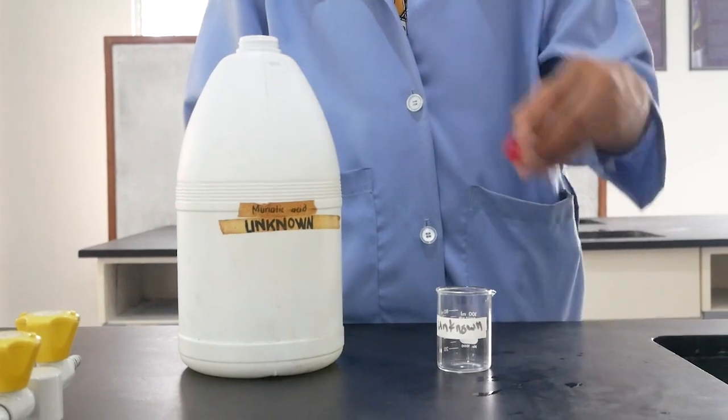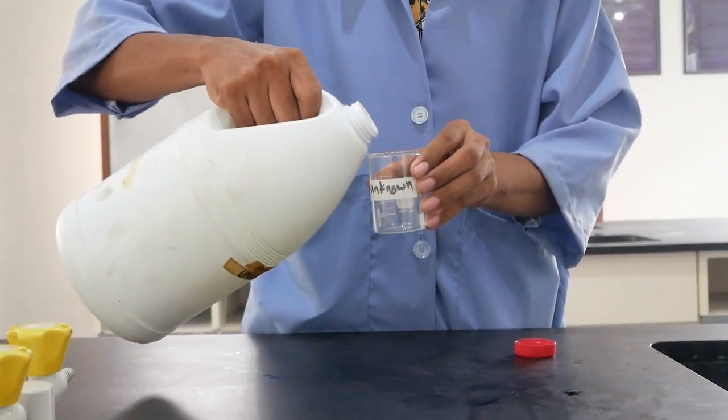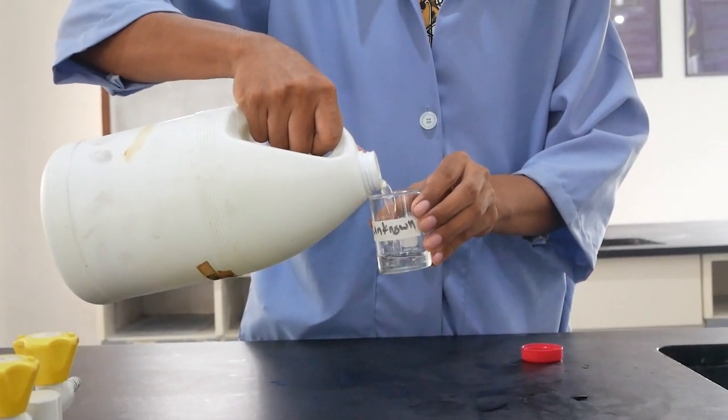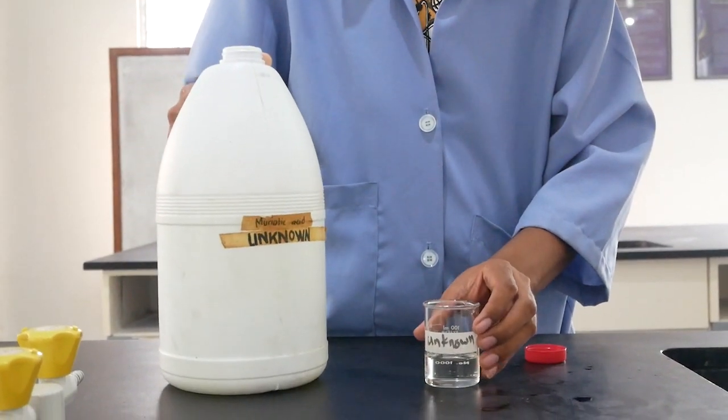Take the hydrochloric acid solution, whose concentration we do not know yet, and pour some of it into a small beaker. This is to be diluted further before it can be used as our analyte.